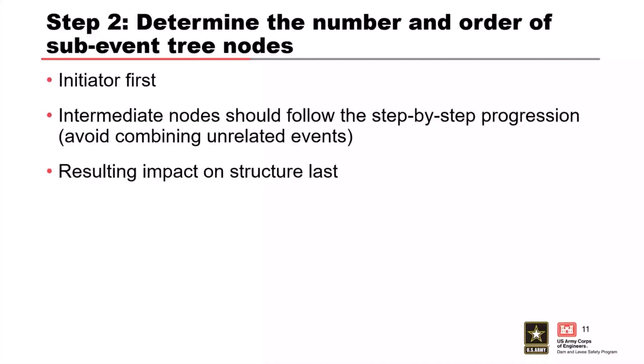Step two: once you've identified all the necessary elements of the failure mode description, you move on to determining the number and order of sub-event tree nodes. The initiator always comes first. The next nodes should consist of the step-by-step progression to failure or breach. Avoid combining unrelated events in your sub-event tree, ensuring each unique step in the failure process is represented — that will only make it harder later. The resulting impact on the structure is the final node in the event tree.